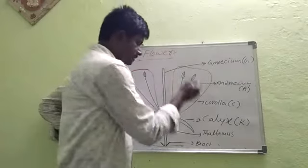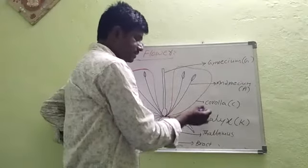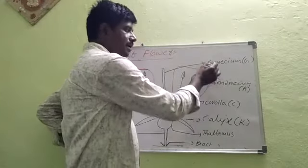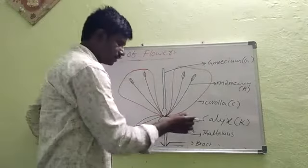The remaining floral parts are called calyx, corolla, androecium, and gynoecium.